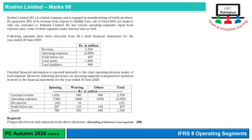Welcome to ABC Campus. Aaj hum IFRS 8 operating segments ka ek past exam question kar rahe hai from Autumn 2020 aur iska title hai Roshni Limited. Ye 8 marks ka question hai.